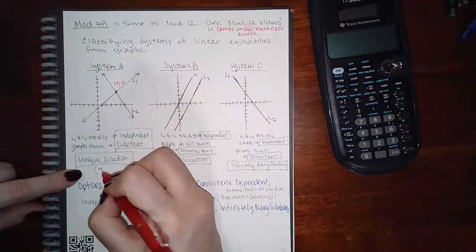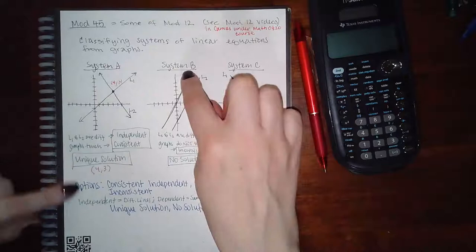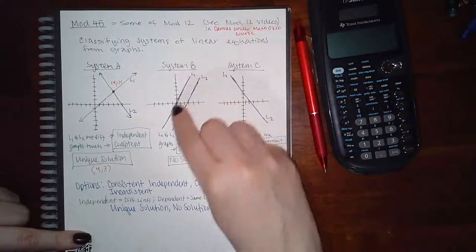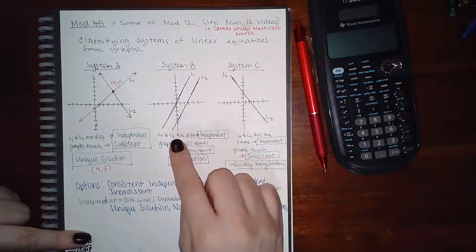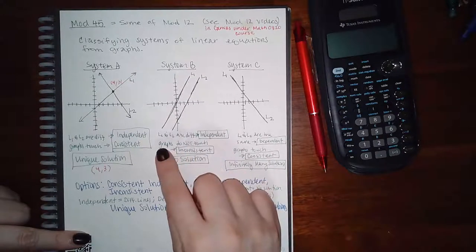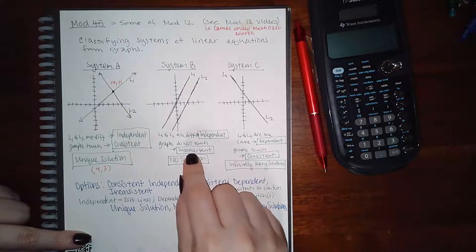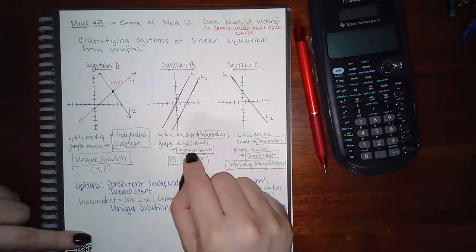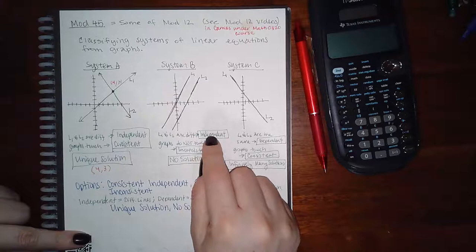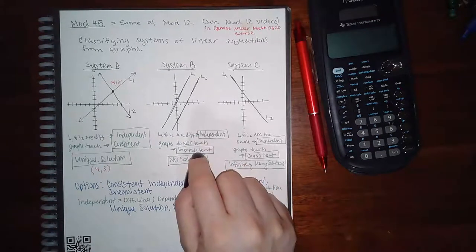Now System B, we have L1 here, L2 there. They're obviously two different lines, so it's an independent system. And the graphs do not touch, which means it's an inconsistent problem. So you would say inconsistent independent, or if it doesn't allow you to select independent, just select inconsistent.